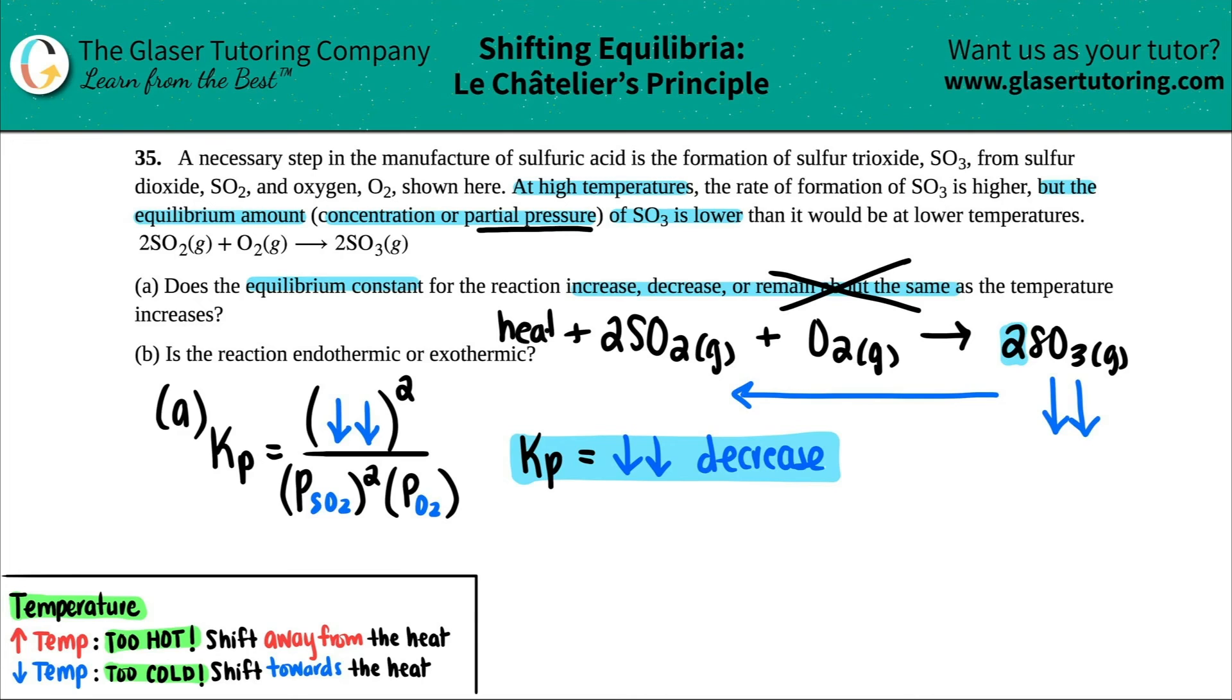So if I'm shifting in the reverse direction and I'm shifting away from the heat, what side did the heat have to be on? Is the heat on this side or is the heat on this side? Yeah, if I'm going this way, I'm not going towards the heat. I'm going away from the heat.